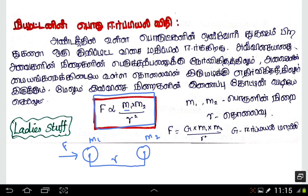It's M1 and M2, divided by R squared. F is directly proportional to M1 into M2 divided by R squared.